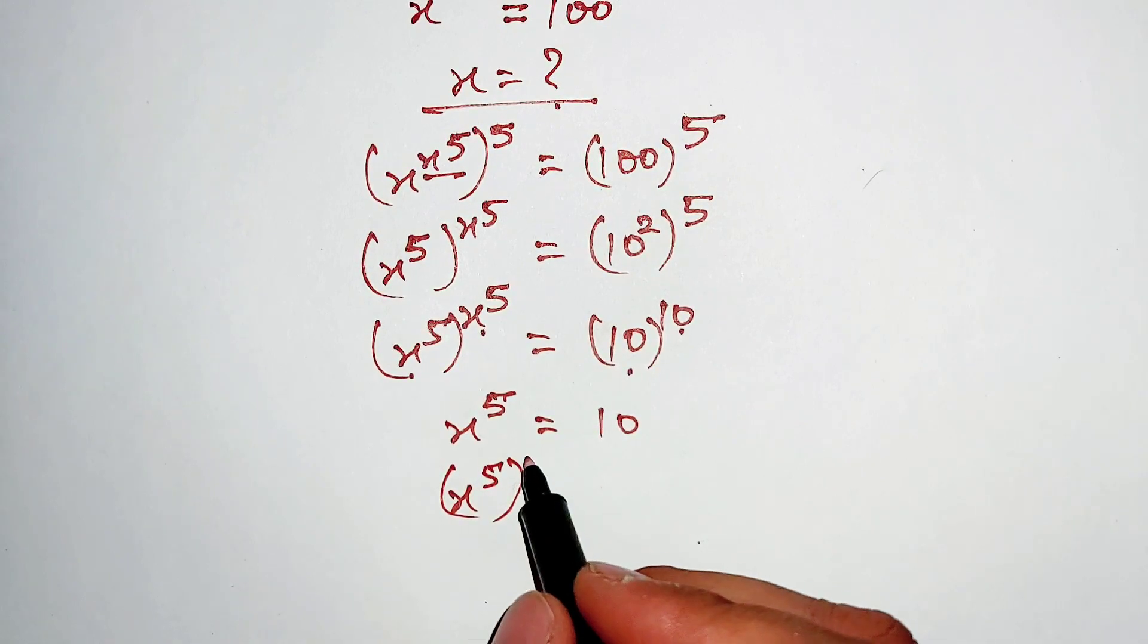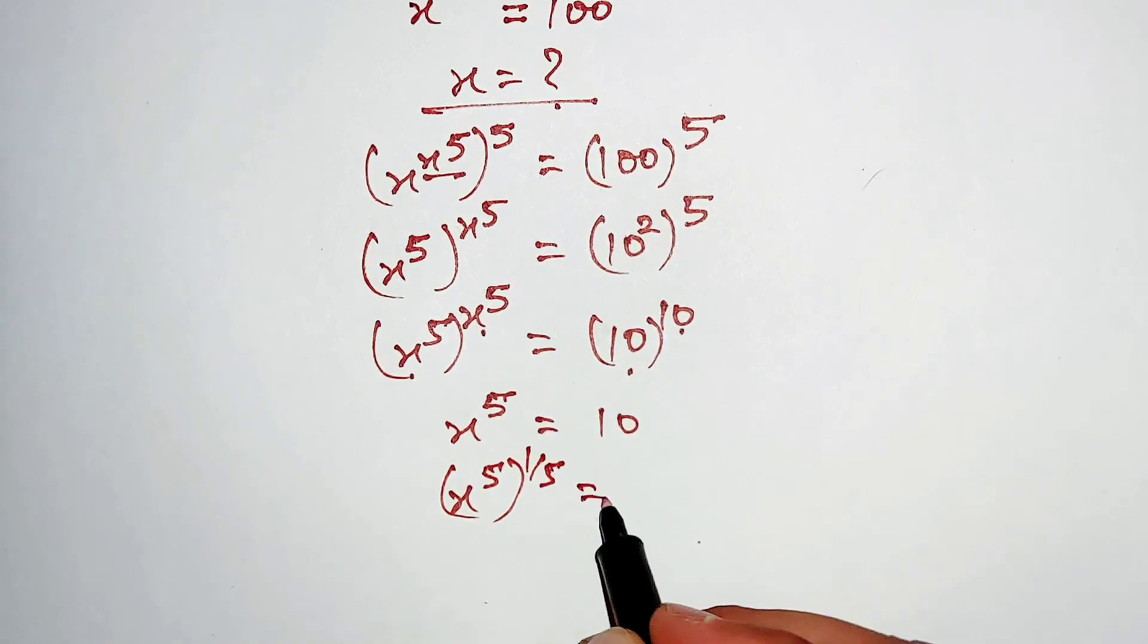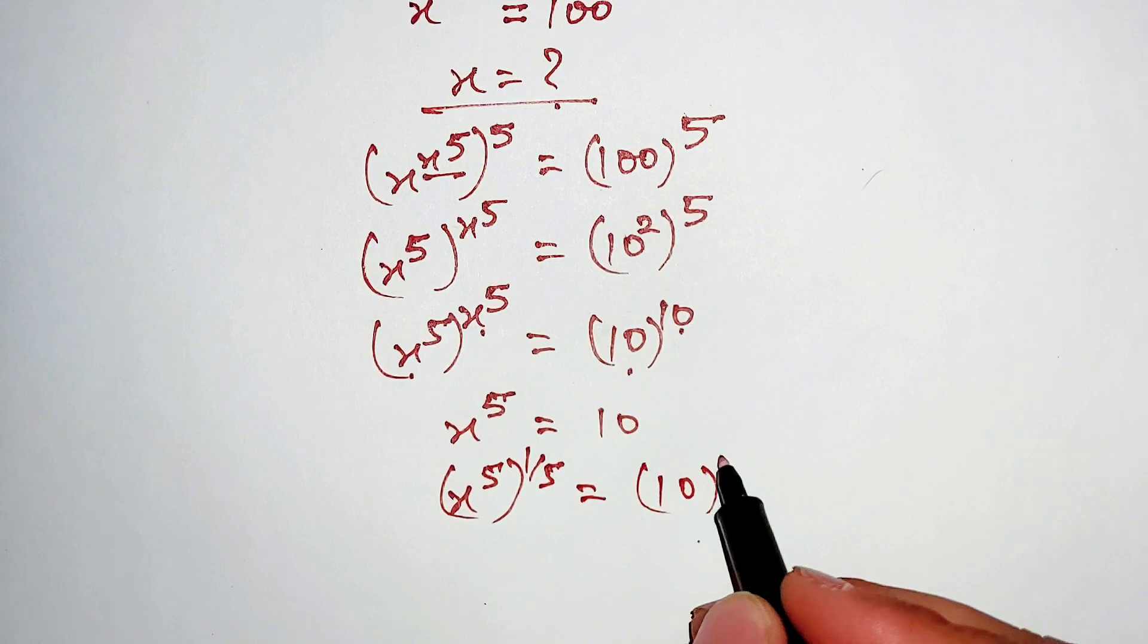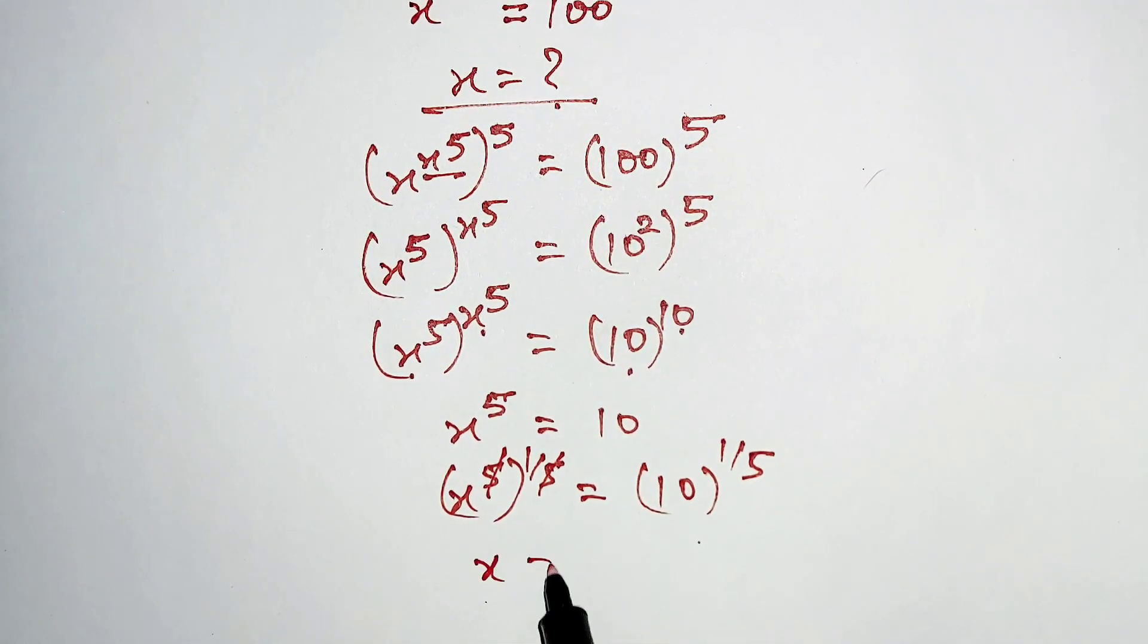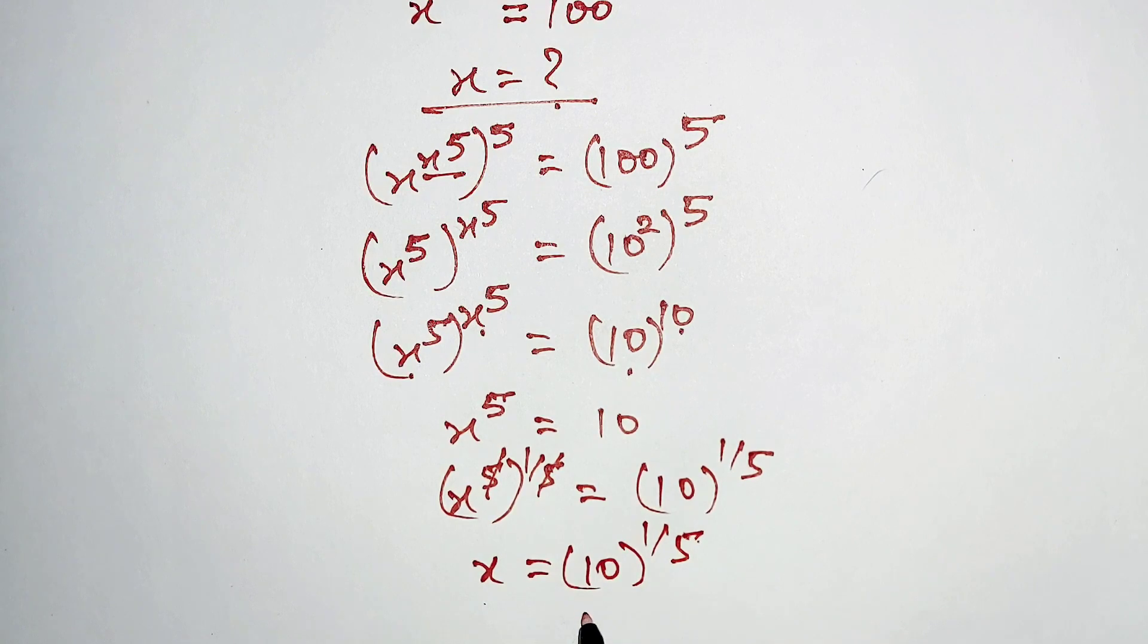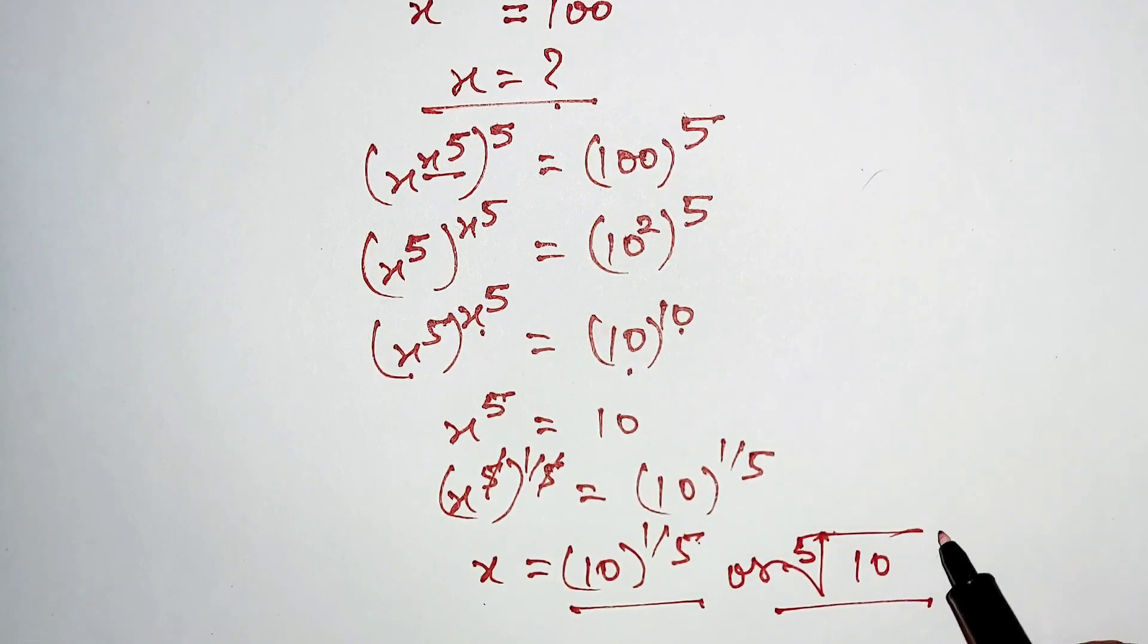Raise both sides to the power of 1/5. The 5 cancels out, and x equals 10^(1/5). This can be written as the fifth root of 10, and that's your final answer.